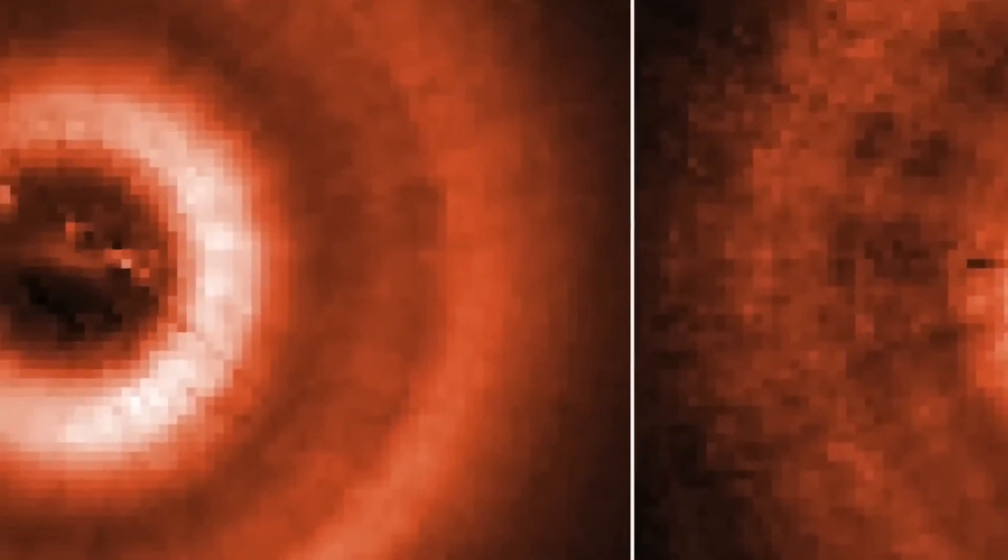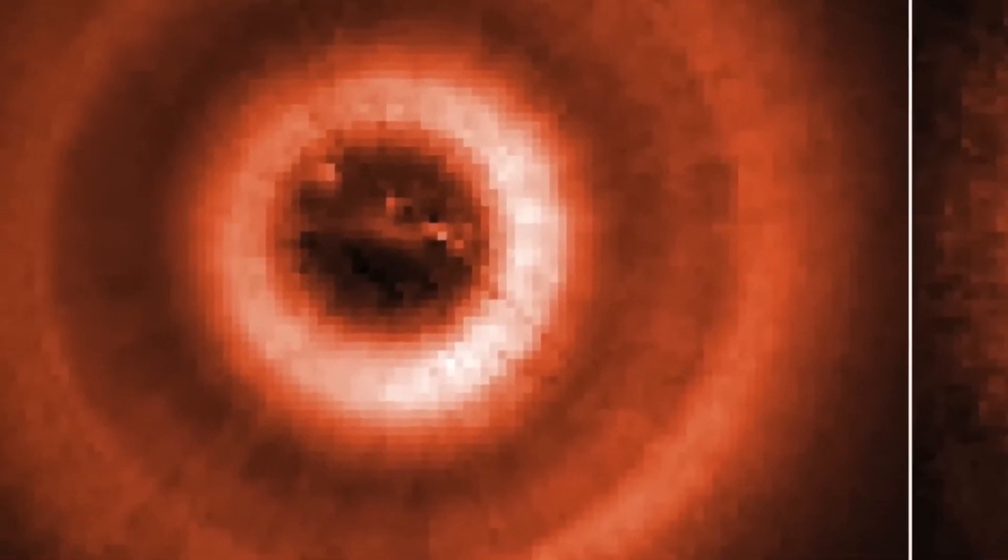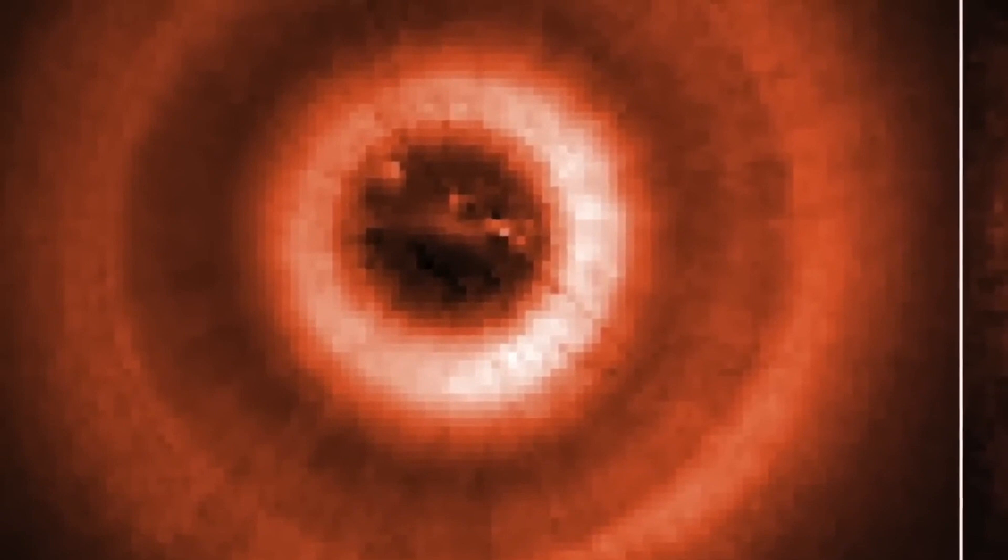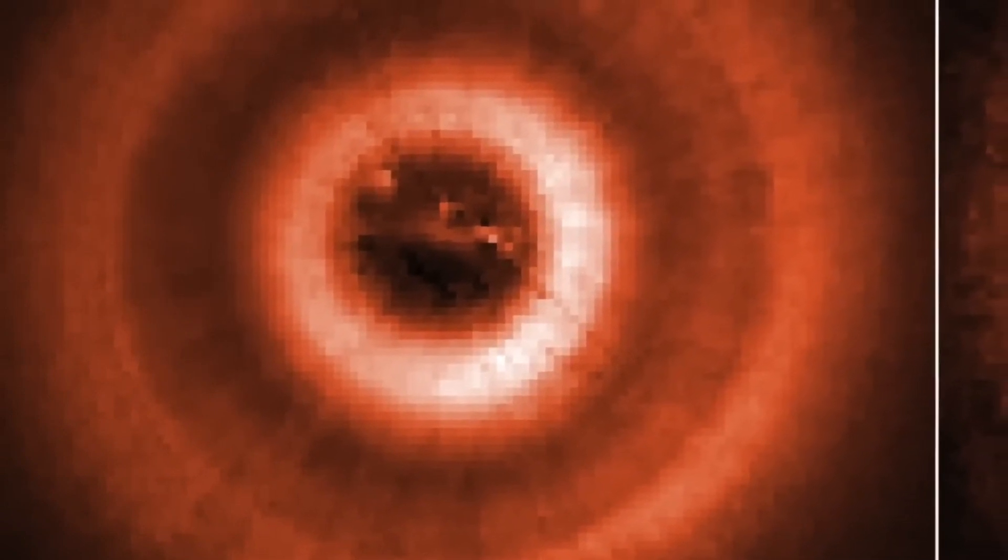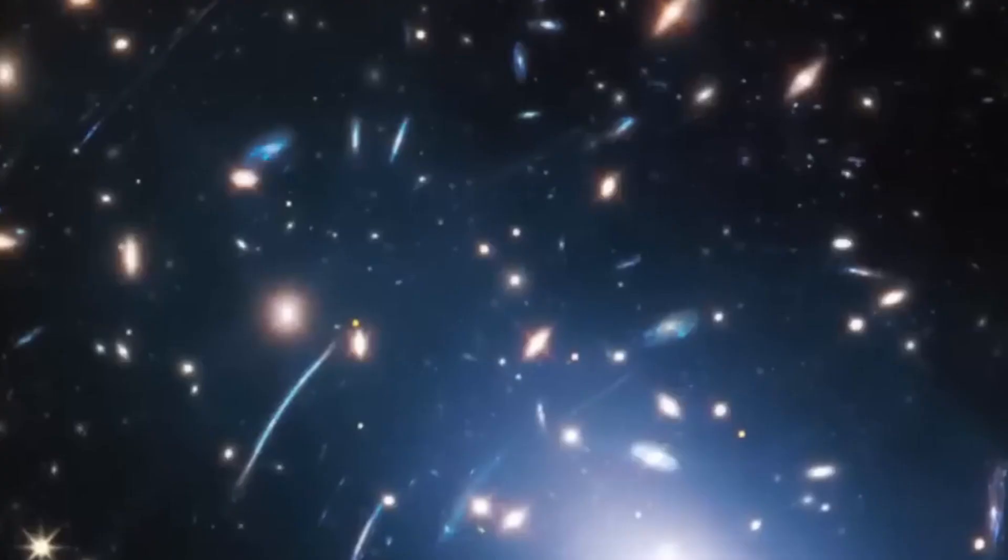Webb has the largest mirror ever flown in space. Its 18 segments are made out of lightweight beryllium and coated with a thin layer of gold, making it much more sensitive to infrared light, allowing it to peer farther back into time than Hubble is ever capable of doing.